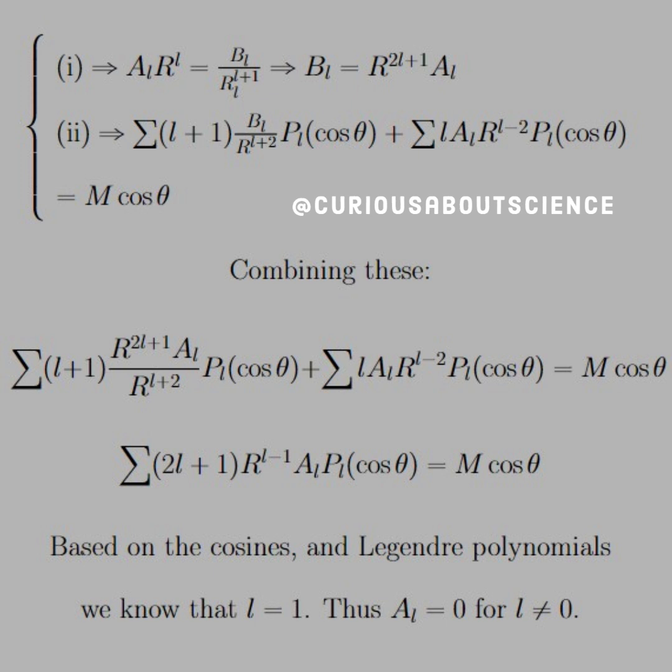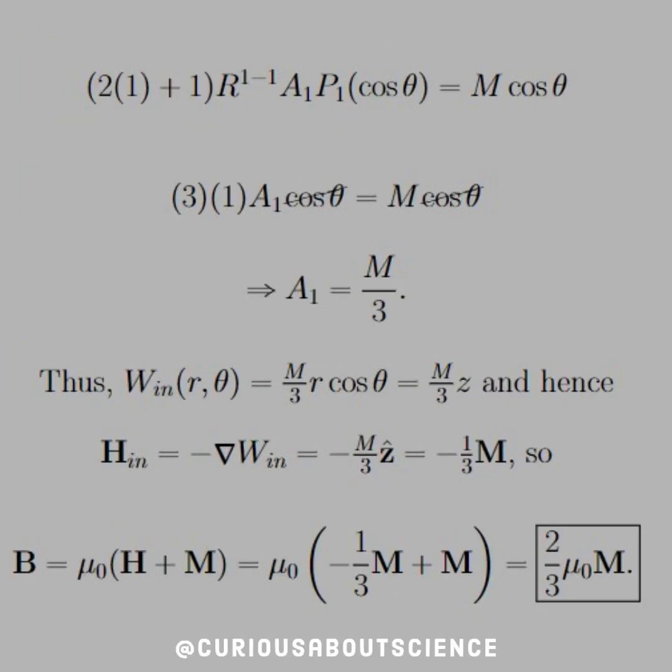Therefore, A of L is equal to zero for L not equal to one in this case. So we just plug in one, and we see what A1 is equal to, which is M over three.